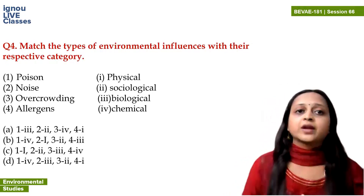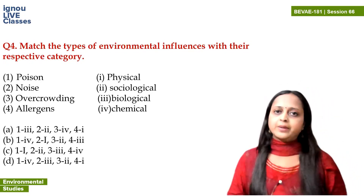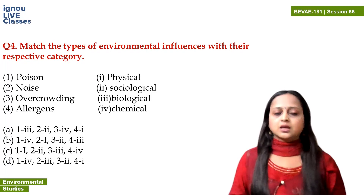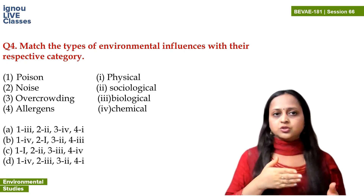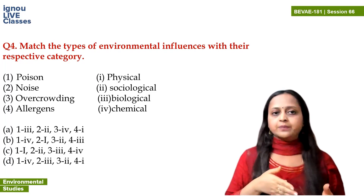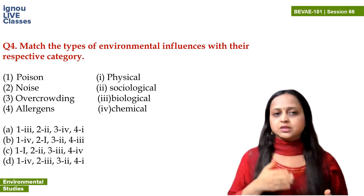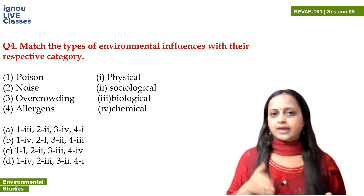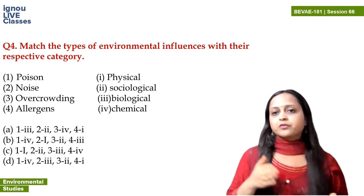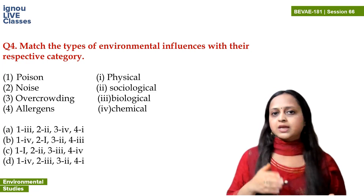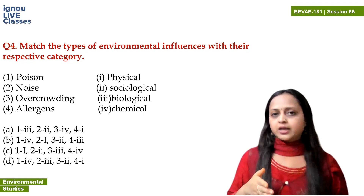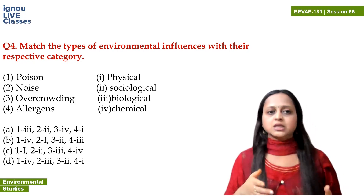Next question: match the types of environmental influences with their respective categories. On the left side are the environmental influences — poison, noise, overcrowding, and allergen. On the right side are the categories — physical influence, sociological, biological, or chemical environmental influence.